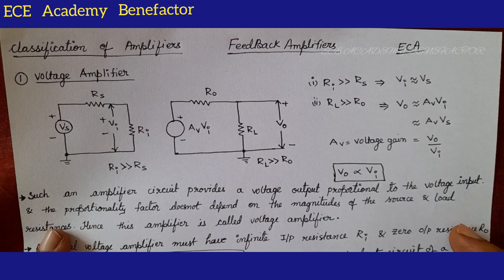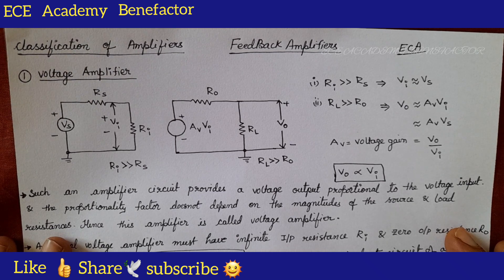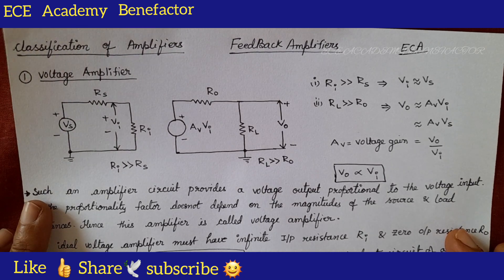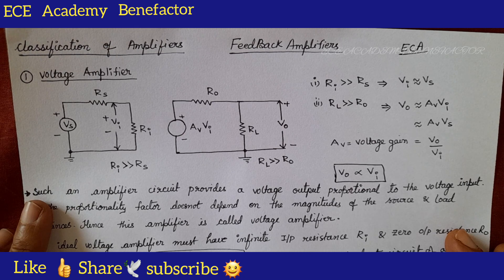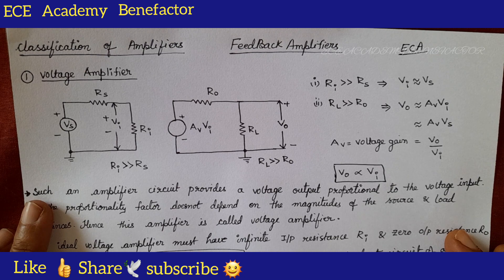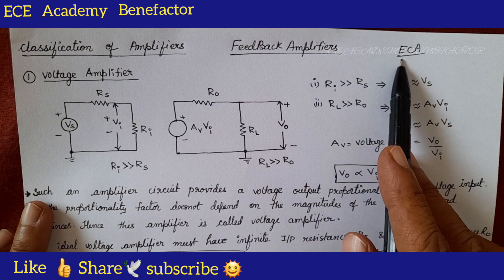Hello dear students. Welcome to ECE Academy. In this class we will be seeing classification of amplifiers based on the magnitude of input and output impedances of an amplifier relative to the source and load impedances respectively. We can classify the amplifiers into 4 broad categories: voltage amplifier, current amplifier, transconductance, and trans resistance amplifier. In this class we will be seeing voltage amplifier and current amplifier. In the next class we will be seeing transconductance and trans resistance amplifier. This topic is from the feedback amplifier unit and the subject name is Electronic Circuit Analysis (ECA).